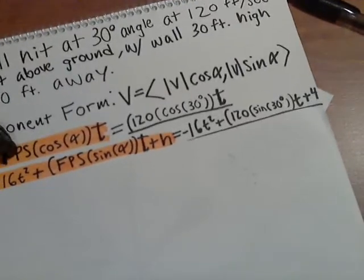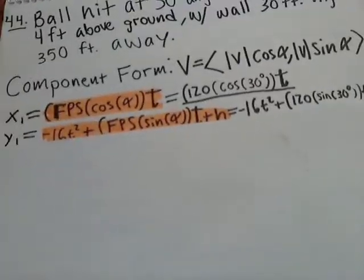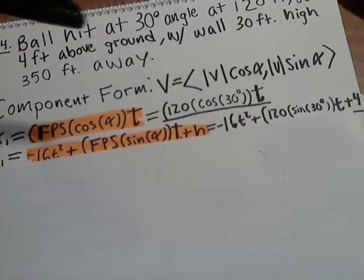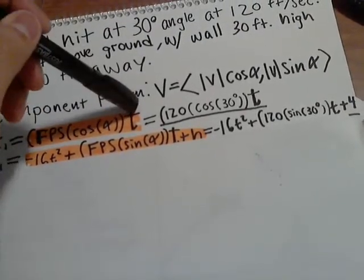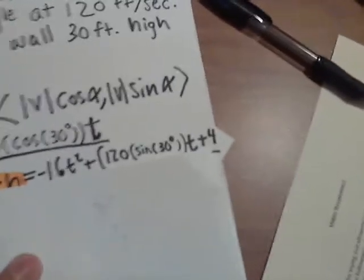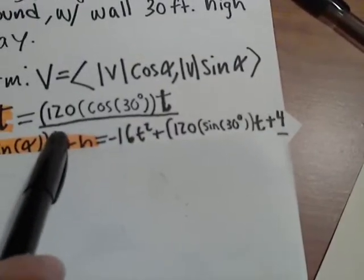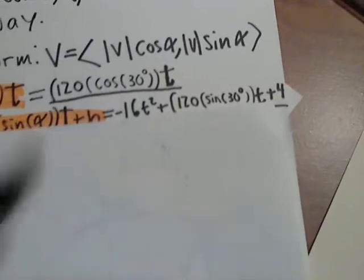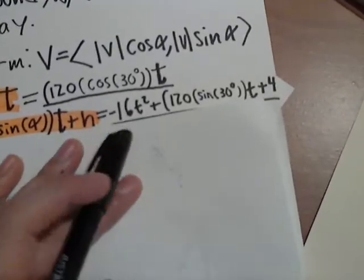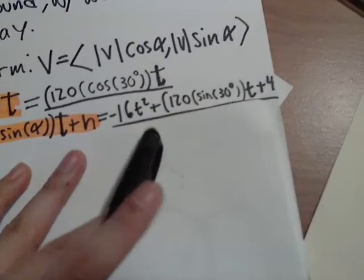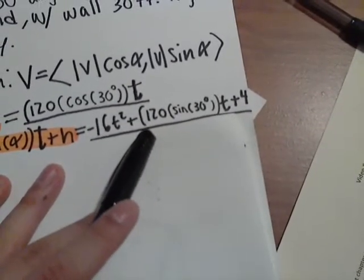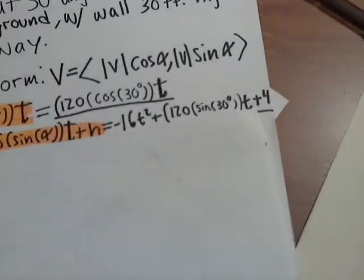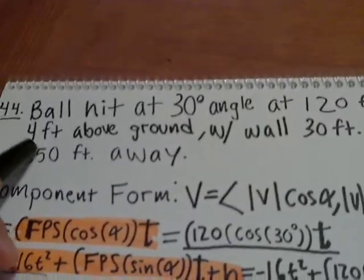These equations with the numbers plugged in look like this: we got 120 for x times cosine of 30 plus t, and for y we got negative 16 t squared, which is gravity, and 120 times sine of 30 times t plus 4. And 4 is the feet that the ball was hit above the ground.